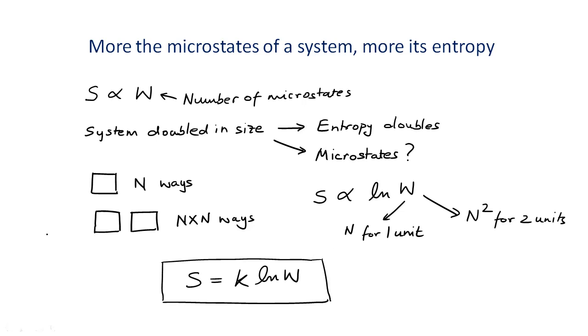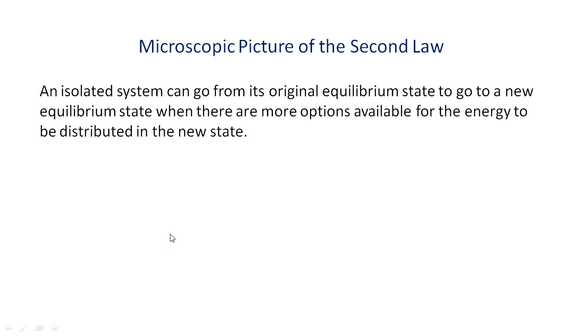Let us now consider the microscopic picture of the second law of thermodynamics. For an isolated system, that is a system where energy is conserved, the system undergoes changes from its original equilibrium state to go to a new equilibrium state when there are more options available for the energy to be distributed in the new state.